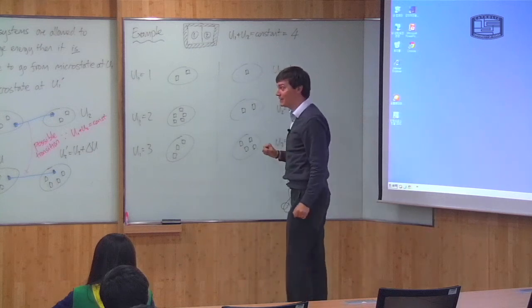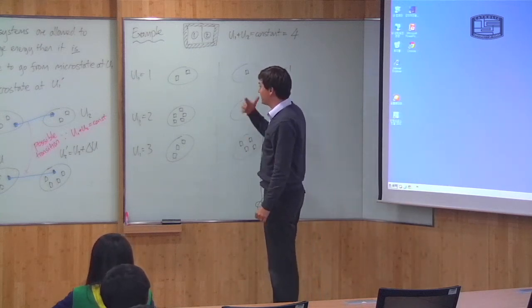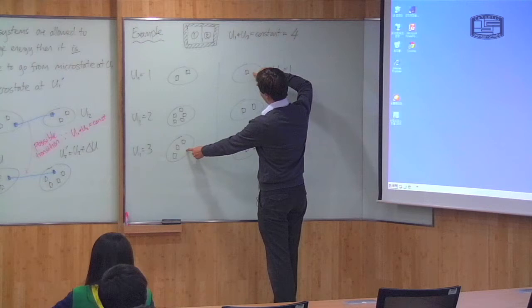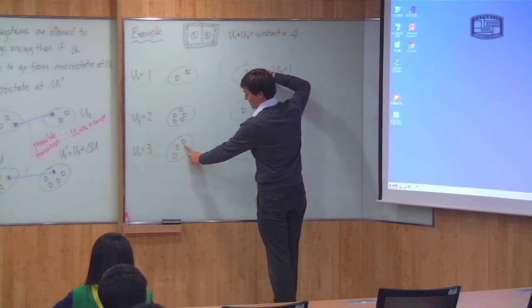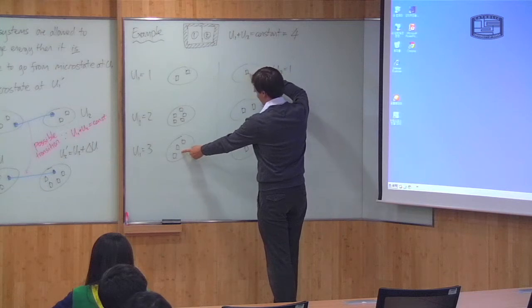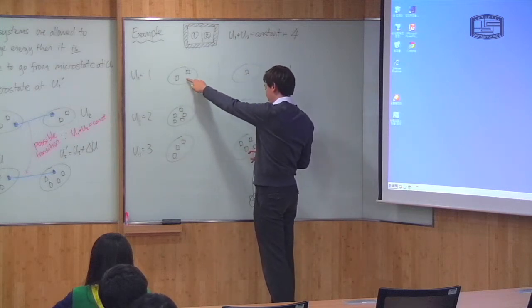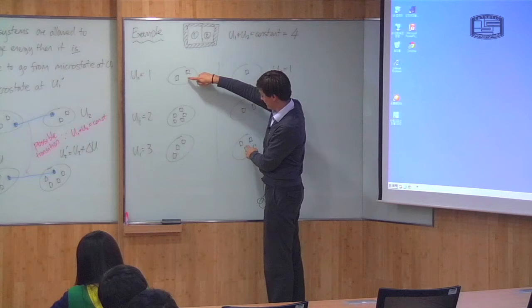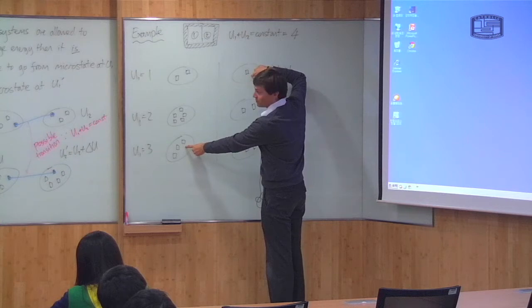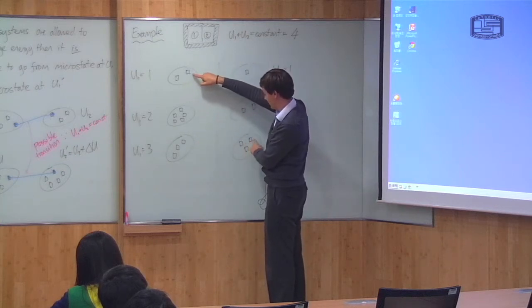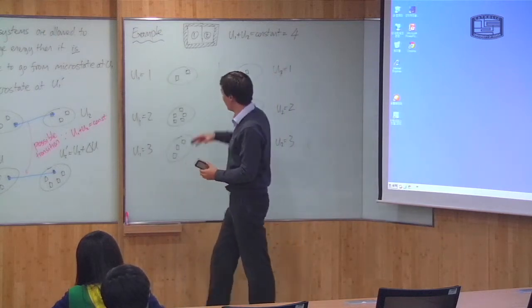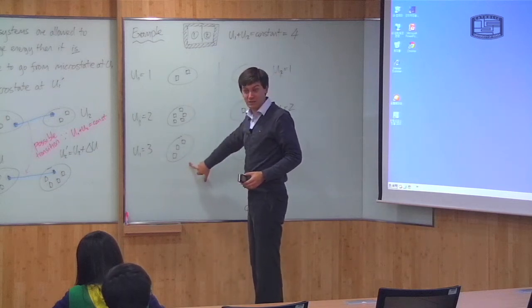Now the fundamental postulate tells you that the probability is equal for each possible microstate. So this way of arranging the system has a probability of 3 divided by the total number of microstates, whereas the other has probability 8 divided by the total number of microstates. So this arrangement of energy is more than twice as likely as the other, because if I arrange energy in this way I have more possible microstates. That's the idea — the fundamental postulate tells you something about the distribution of probability of energy when I connect two systems.